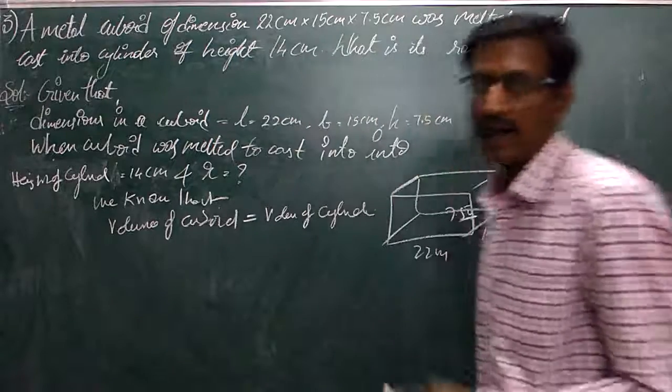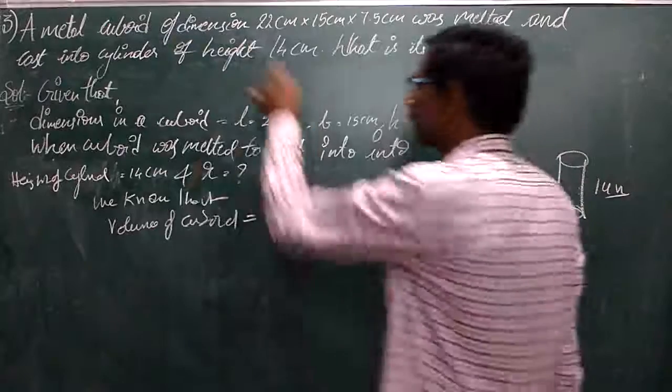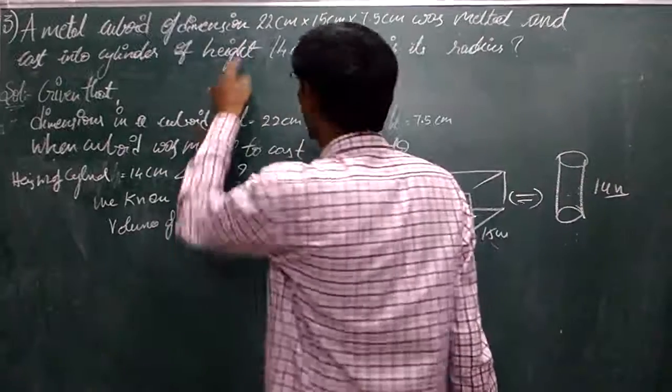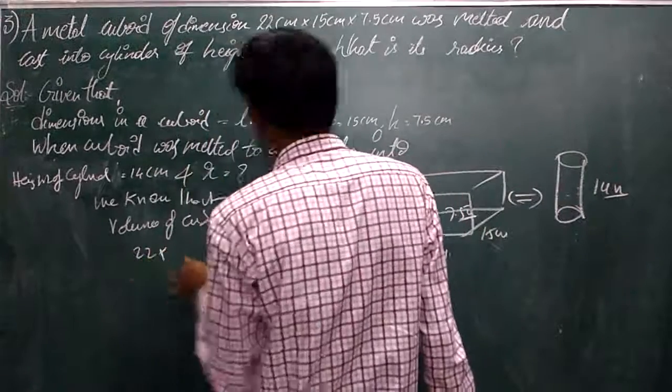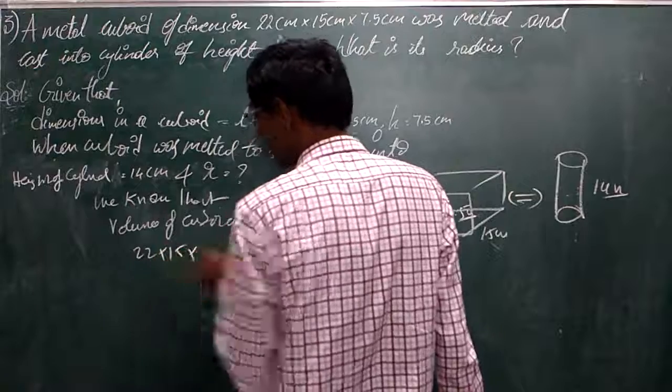Volume equals length into breadth into height. So 22 x 15 x 7.5.